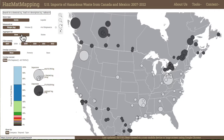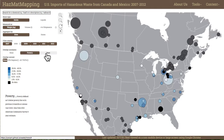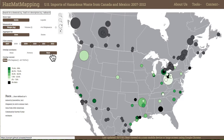Returning to the site-level proportional symbols, the permit manager begins to assess potential drivers of inequality and waste hazard within Arkansas, particularly as it may relate to socio-economic inequalities in surrounding communities. Using the advanced context controls, she toggles overlays of poverty and race data for all import sites, which shade the site's proportional symbols according to the selected demographic attribute. This supports direct visual comparison between the volume of imported hazardous waste by symbol size and surrounding demographics by symbol color.